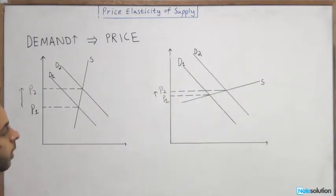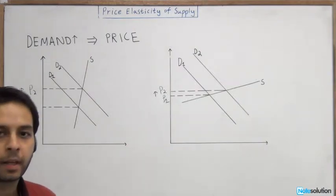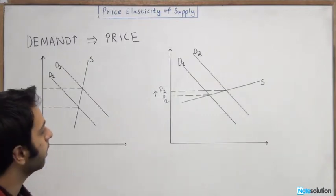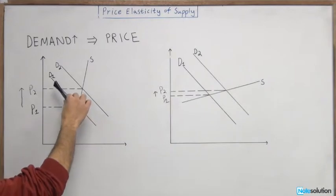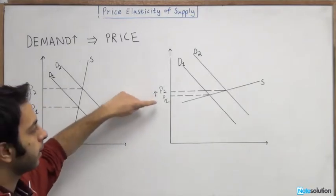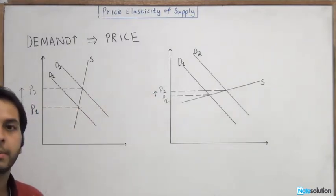Let's start with the first case. We see the demand for corn increases. Just intuitively speaking, if the demand for something goes up, then the price will go up. As we've shown over here, D2 is greater than D1, so there's a shift, and the price has increased — and so is the case over here as well.